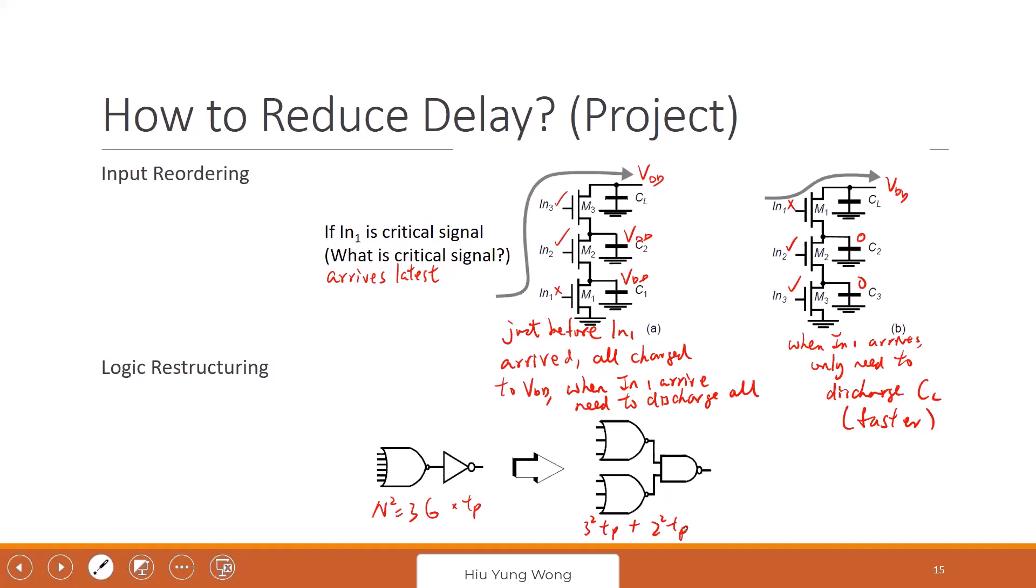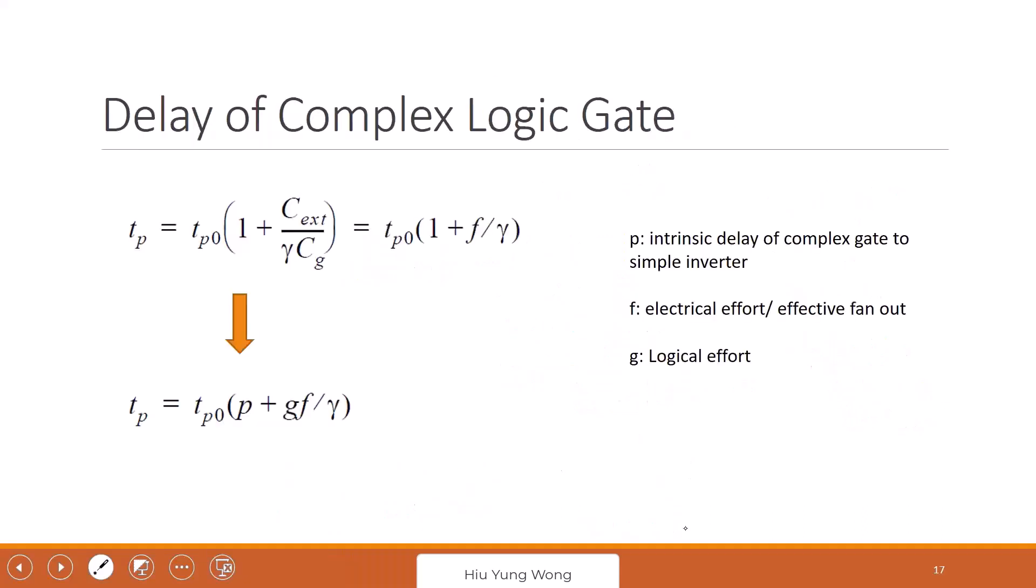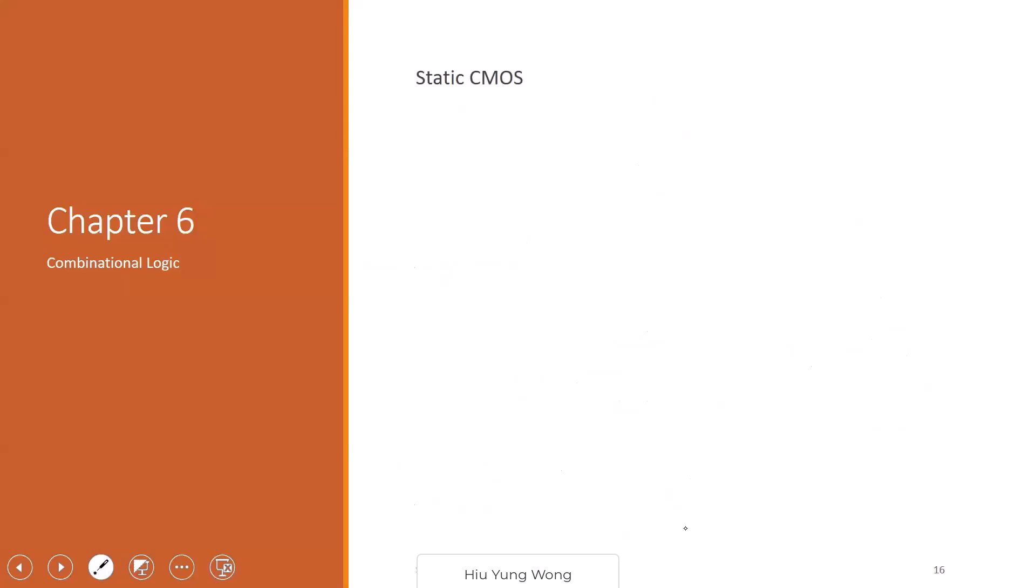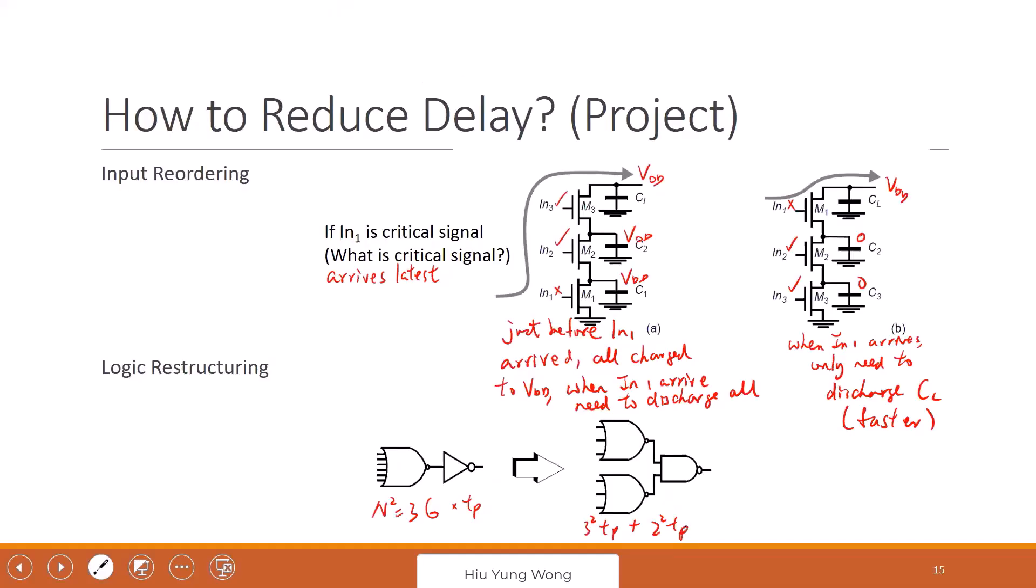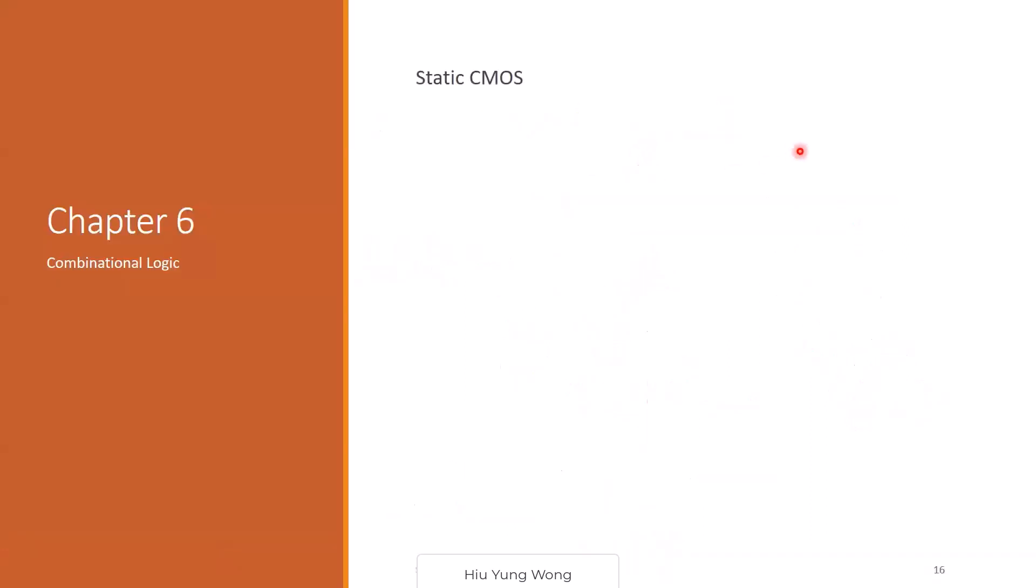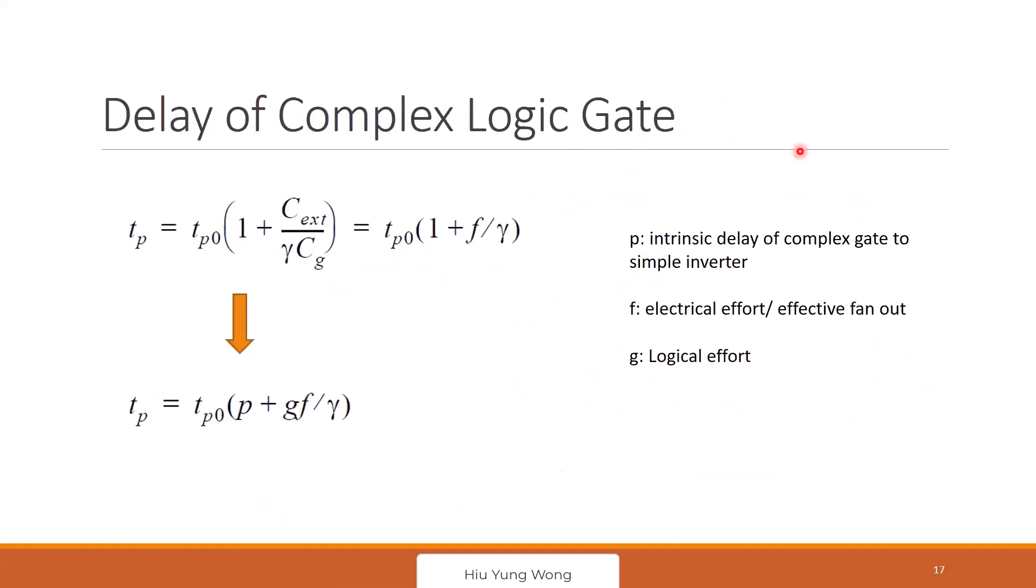So we are done with the basic static and delay. Now we want to do optimization. So before I move forward, any questions, everything all right? Okay. So now how do we optimize the complex logic?